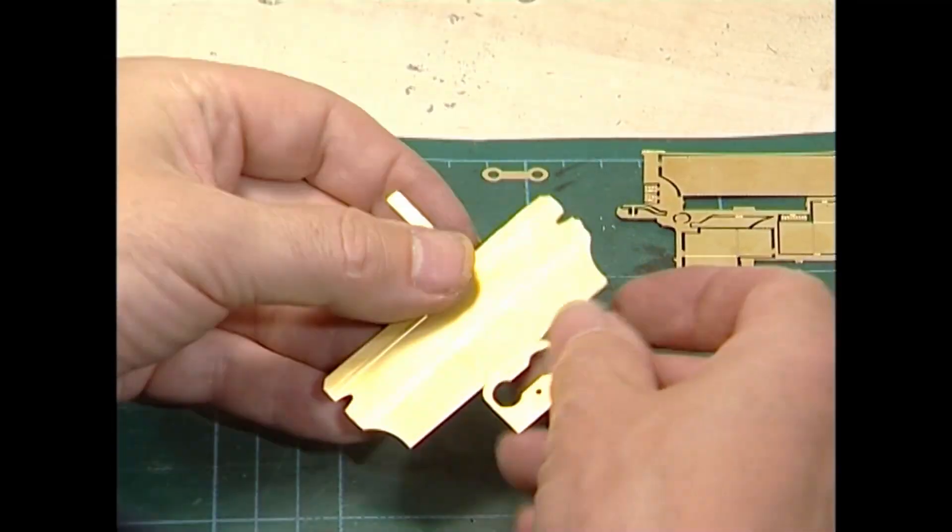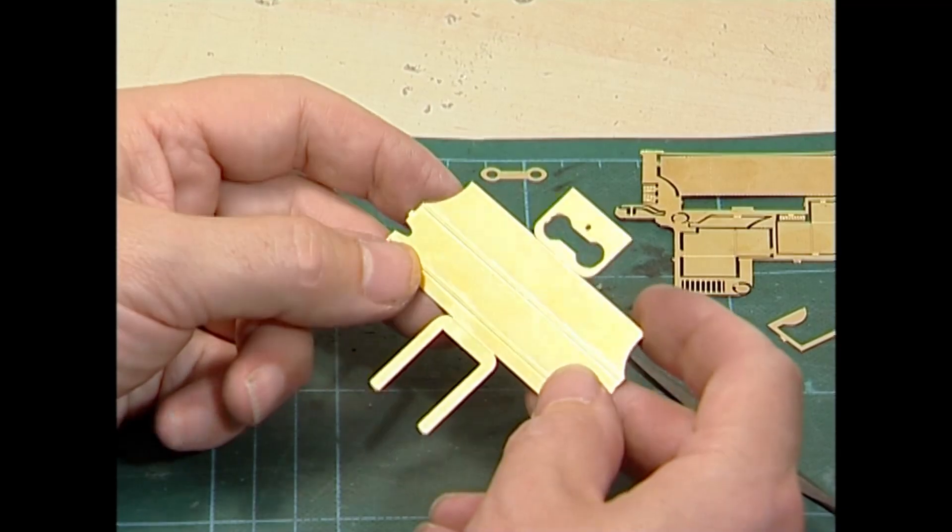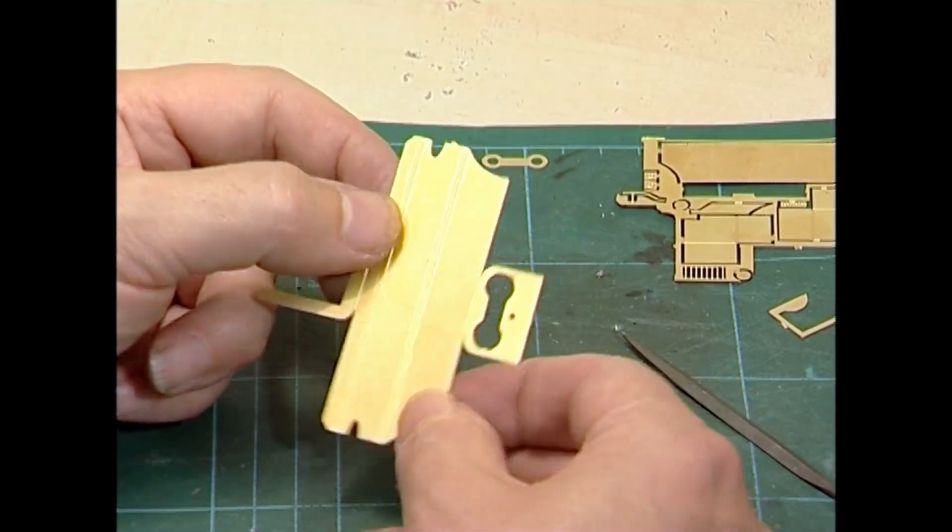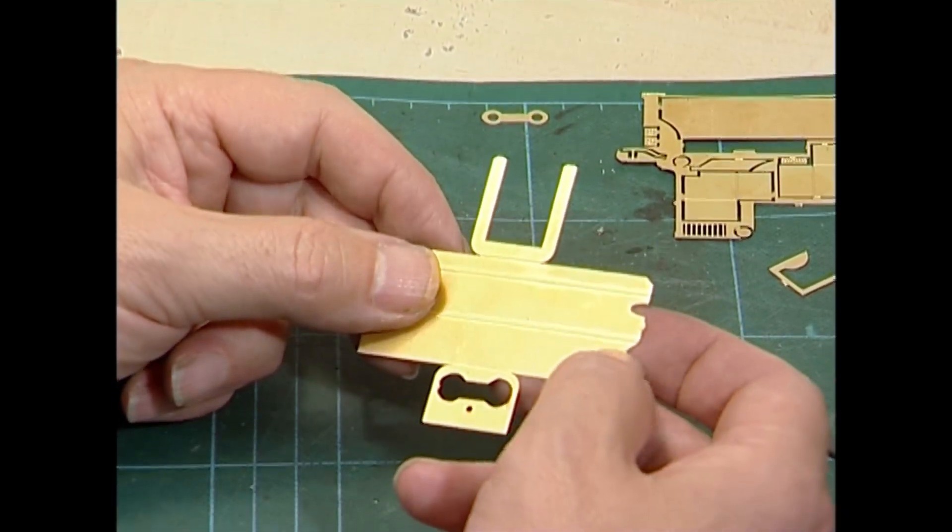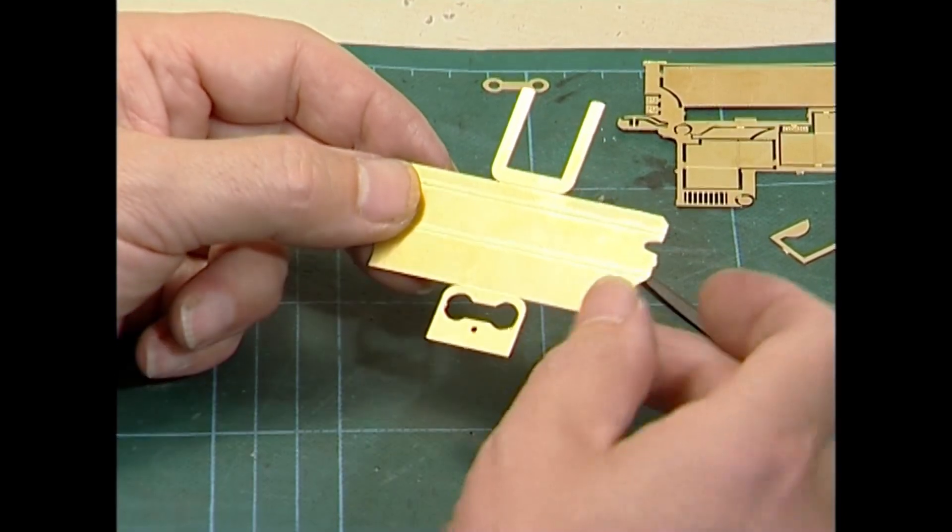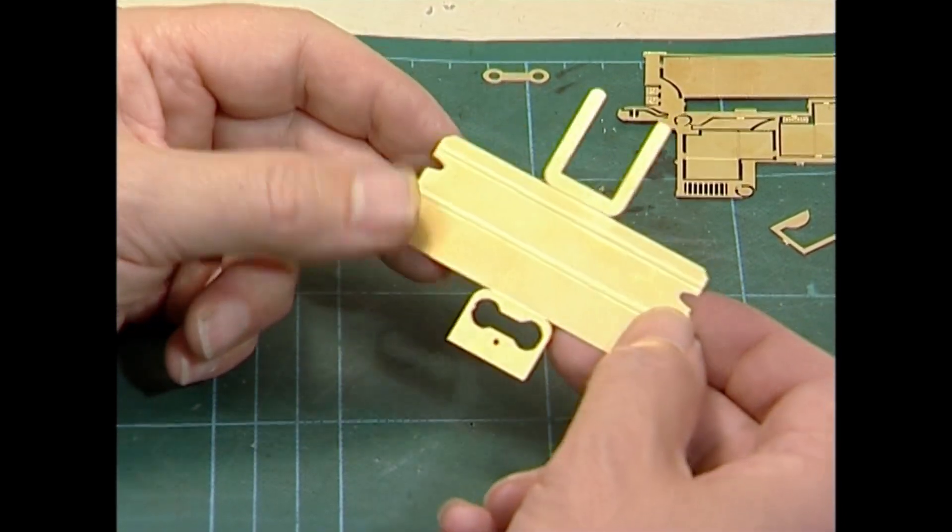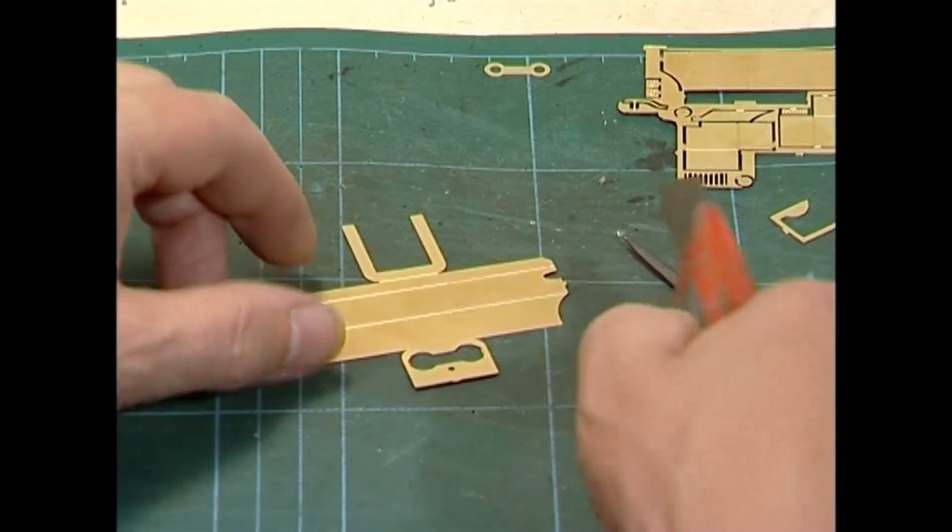Again, it doesn't matter too much if there's a little bit of a mark or a cusp left there. I'll just try and nick a bit more of it away. But since that won't be seen, it really doesn't matter. What you have to try and take care not to do is distort this brass.